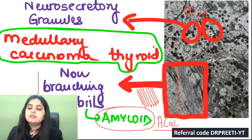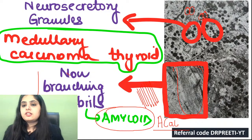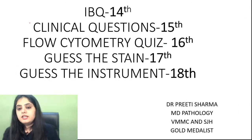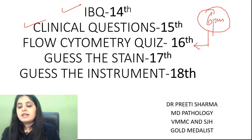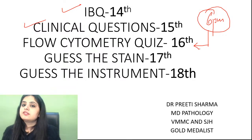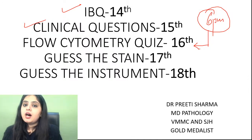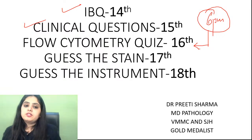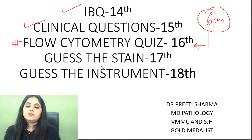Putting two and two together: neuro-secretory granules indicate neuroendocrine origin, and non-branching fibrils indicate amyloid — confirming medullary carcinoma thyroid. That ends today's session. Tomorrow we meet again at six o'clock for the flow cytometry quiz covering WBC (leukemias/lymphomas), platelet disorders, RBC diseases, and apoptosis flow cytometry charts — every easy-to-tough flow cytometry chart that could appear in your paper.